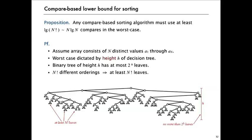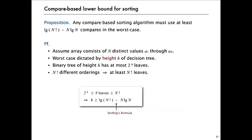We assume that the array consists of N distinct values. And there's a decision tree that describes the performance of any algorithm, the compare sequence done by any algorithm, to determine the N factorial different orderings. So this tree has to have at least N factorial leaves. And if the tree is of height H, it has at most 2 to the H leaves. The tree that has the most leaves of height H is totally complete, and that one has 2 to the H leaves.